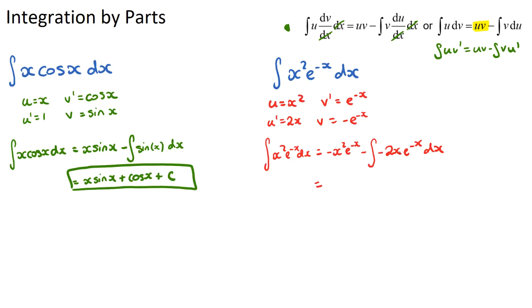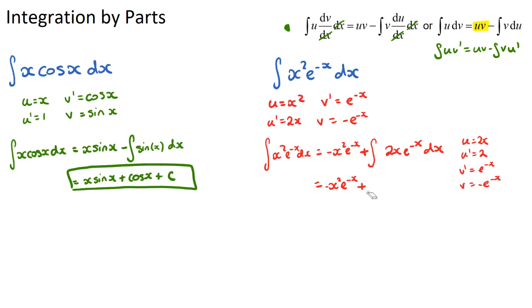Let's tidy this up. The double negative gives us a plus, so we have −x²·e^(−x) plus the integral of 2x·e^(−x) dx. For this second integration by parts: u = 2x, u' = 2, v' = e^(−x), and v = −e^(−x). Applying the formula, the integral of 2x·e^(−x) becomes u·v = −2x·e^(−x), minus the integral of v·u' = −2e^(−x) dx.